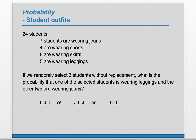So we can find their probabilities and then add them up. Starting with L, J, J: for leggings that's 5 out of 24, and then without replacement, the first J is 7 out of the 23 students left, times 6 jeans remaining out of the 22 remaining students.